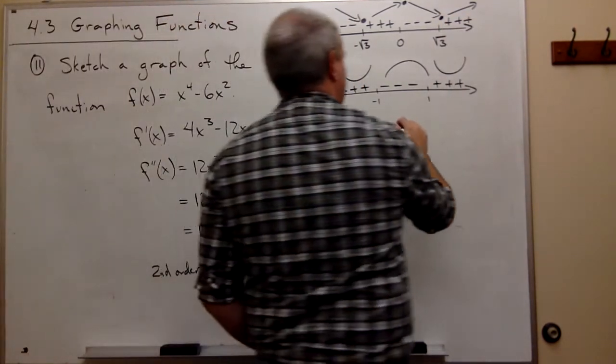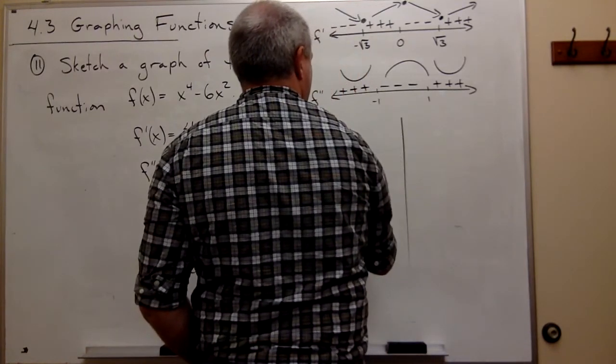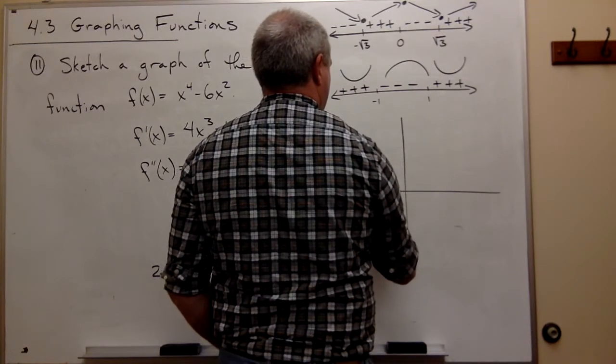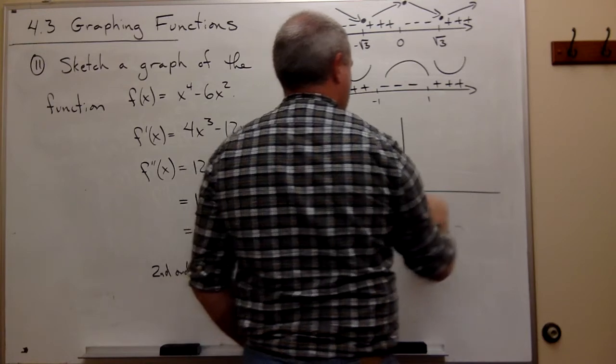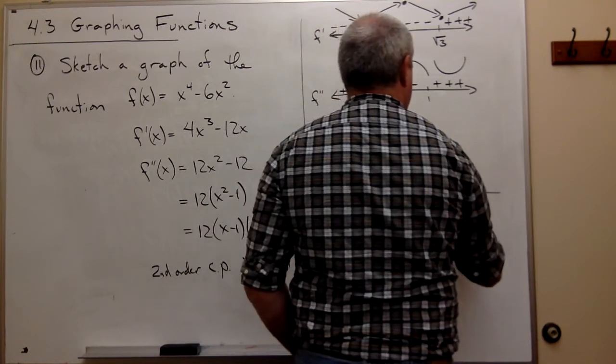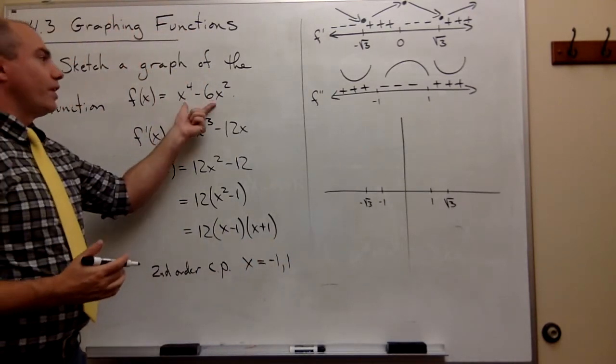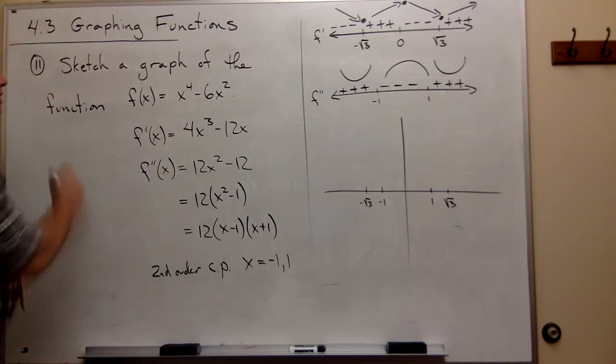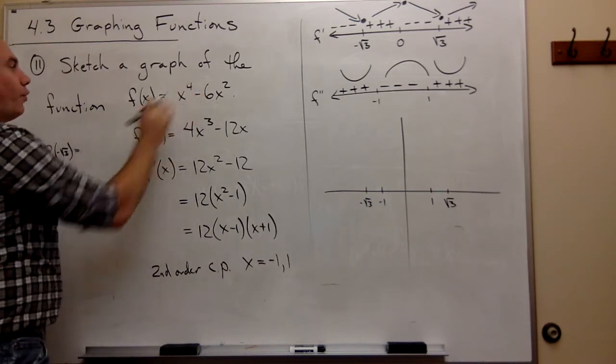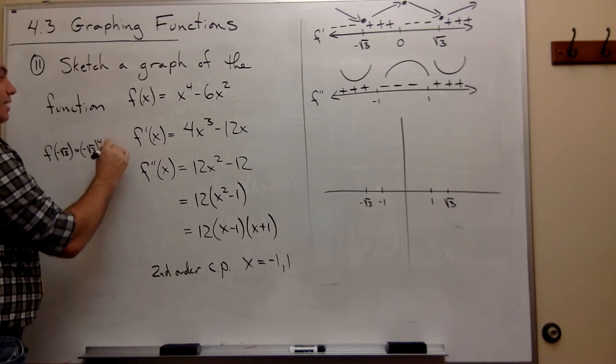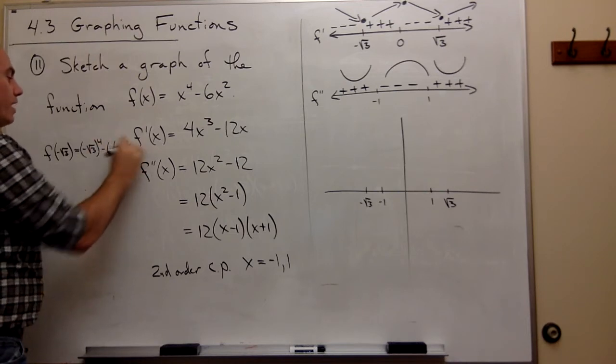Let's start graphing this thing. Here's minus root 3. Here's minus 1. Here's 1. Here's root 3. And it would be really great if I could plug these things into the original function and actually get some functional values out. So let's see. What's f of minus root 3?